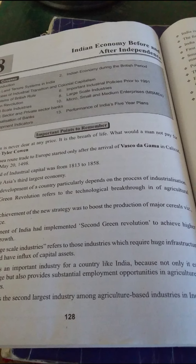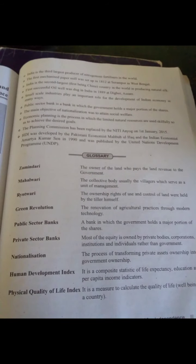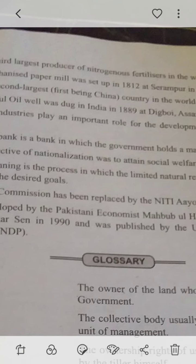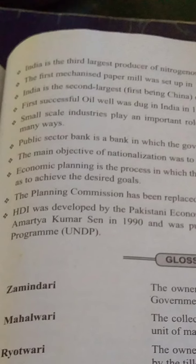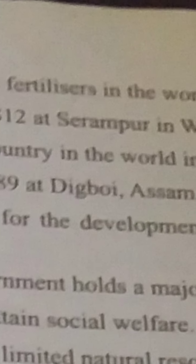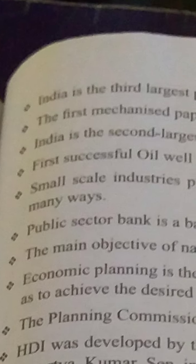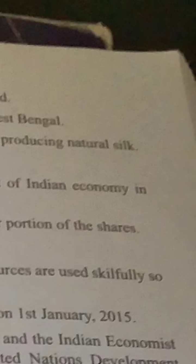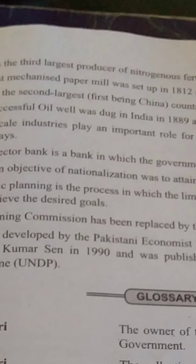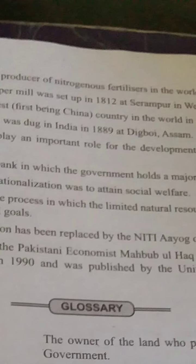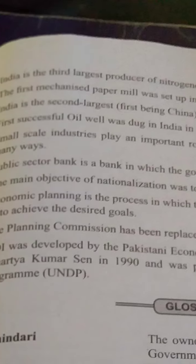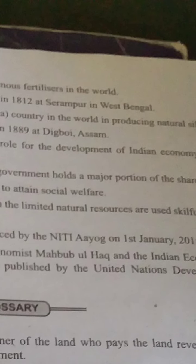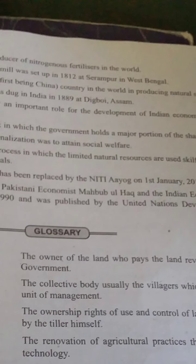Sugar industry is the second largest industry among the agriculture-based industries in India. The first mechanized paper mill was established in India. India is the second largest producer of natural silk in the world — first is China, second is India. The first successful oil well was dug in India in 1889, before independence.